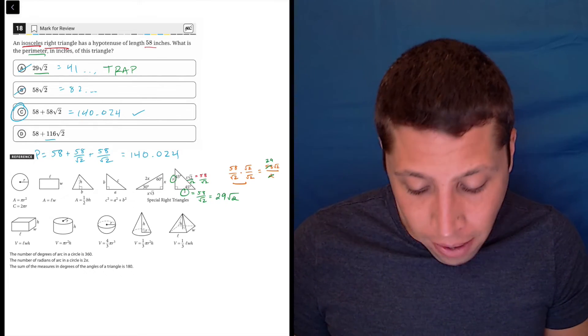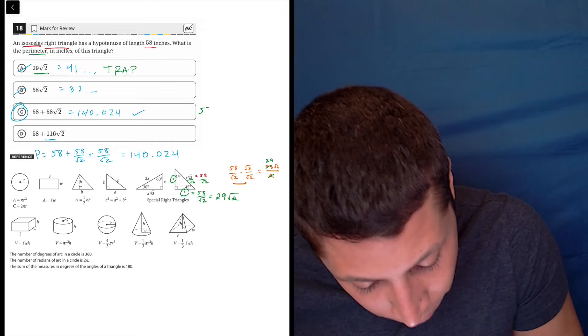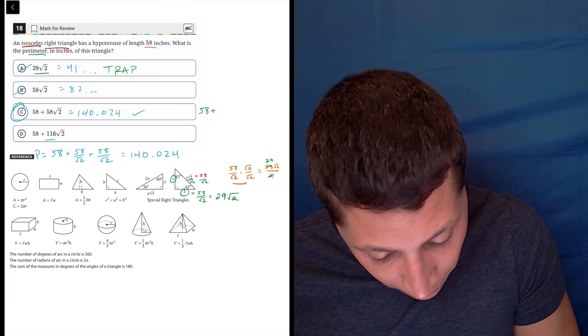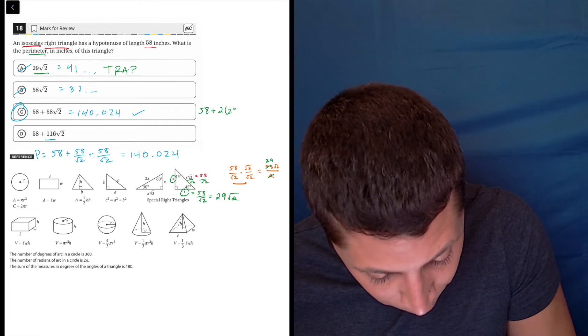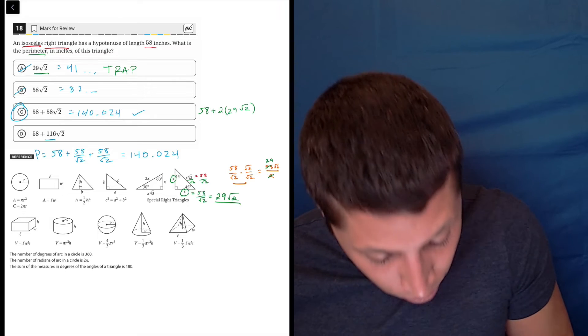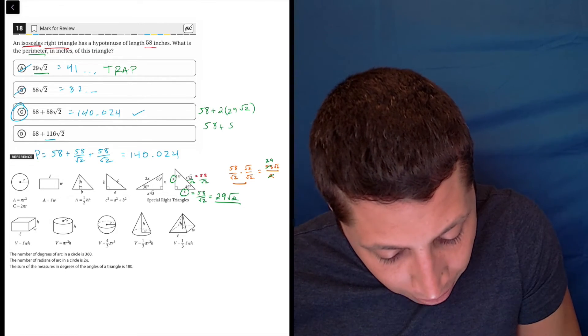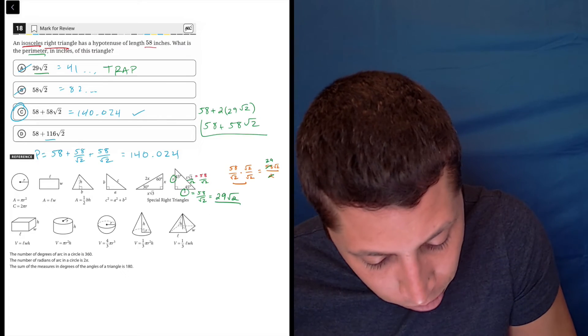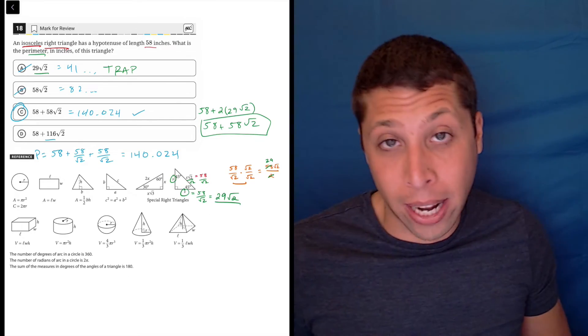But we could then find the whole thing by doing 58 plus, that's the hypotenuse, 2 times 29 root 2, which was our S, and then there you go, that's 58 plus 58 root 2. So that's how we would get it directly.